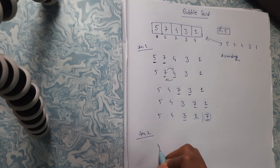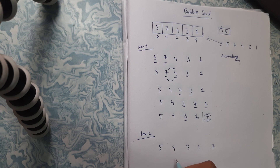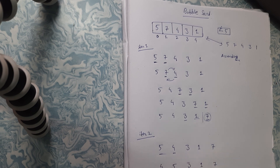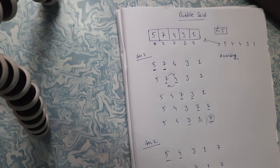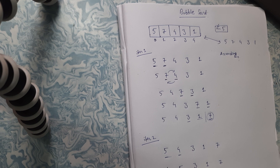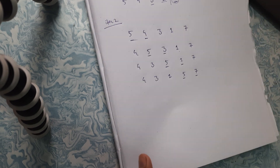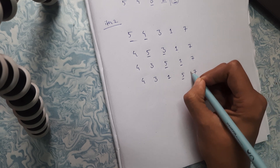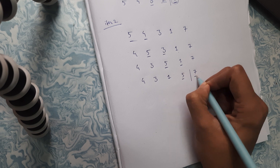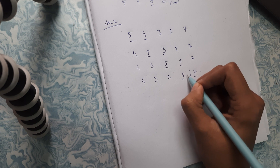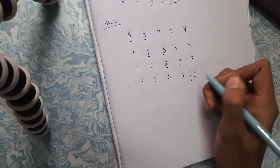In the second iteration we have the array 5, 4, 3, 1, 7. Comparing 5 and 4: since 5 is greater than 4 we swap them to get 4, 5, 3, 1, 7. Again, since 5 is greater than 3 we swap them. Then comparing 5 and 1: since 5 is greater than 1 swapping is required. Now we will not compare 5 and 7, because 7 is already in its correct position — no need to compare again and add to the time complexity of this sorting technique.